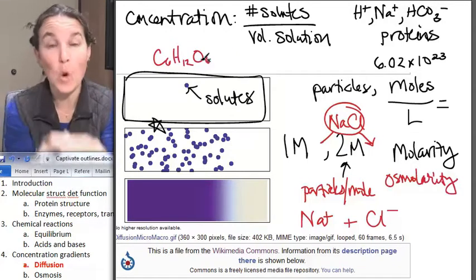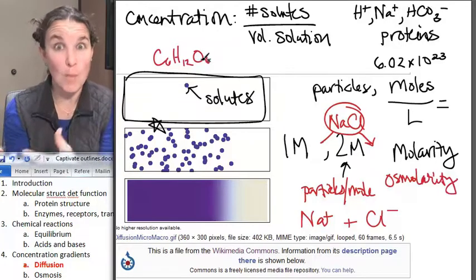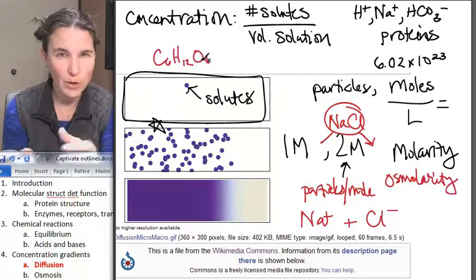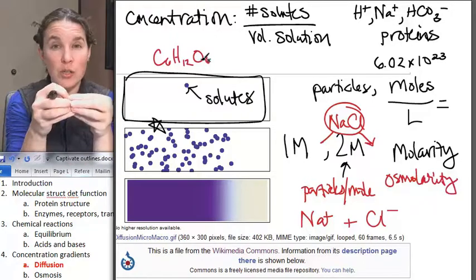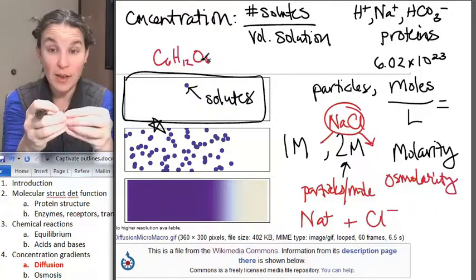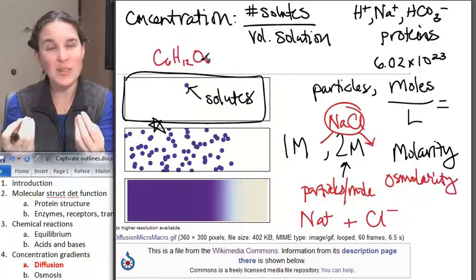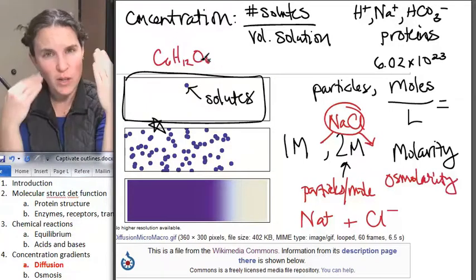So if you put a mole of glucose into a solution, you're going to end up with a mole of particles. Does that work for you? If you put a mole of sodium chloride into a solution, one mole goes in, what do we have at the end? Well, it dissociates in water. So now we have two moles of particles. You follow that?